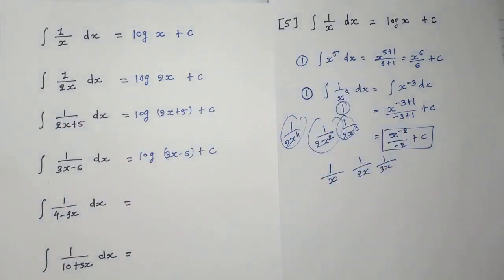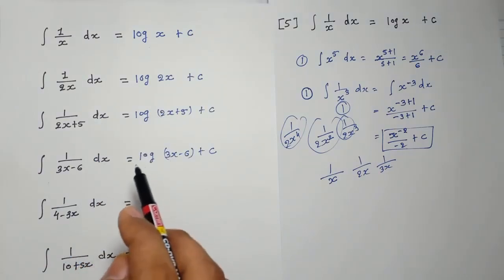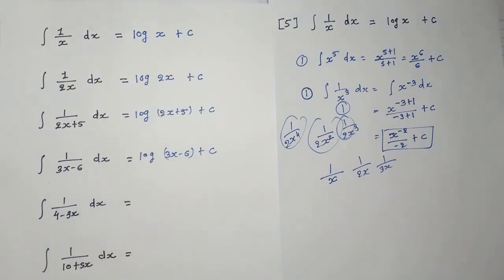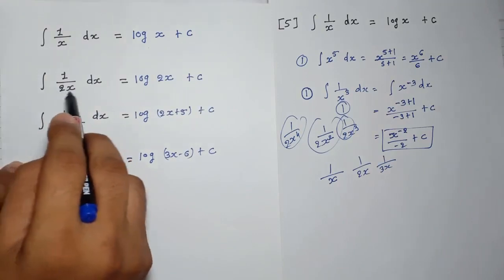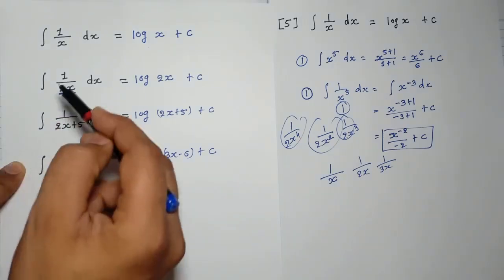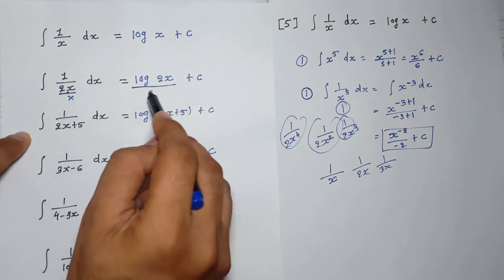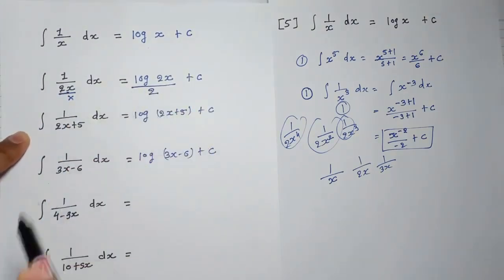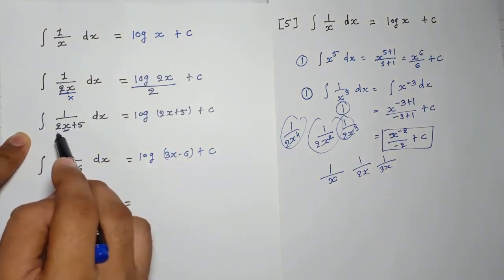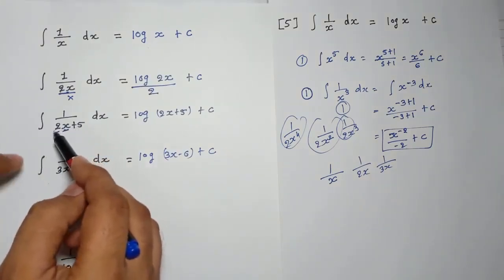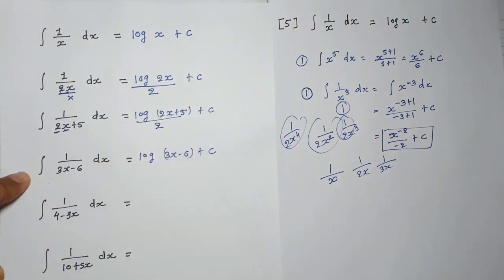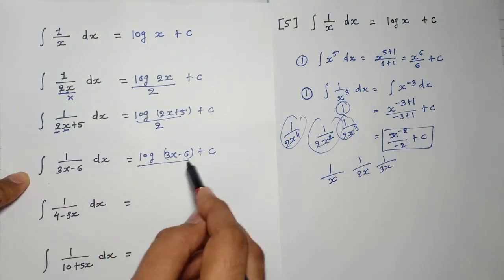But our calculation is not yet completed. The rule I told in the previous video: if any number is multiplied by x, we write it in the division. Here, 2 and x — what is the relation between 2 and x? That is multiplication. So we write it in division. Here, 2 is multiplied by x, so divide by 2. Same here: 3 is multiplied by x, so divide by 3. This is the final answer.